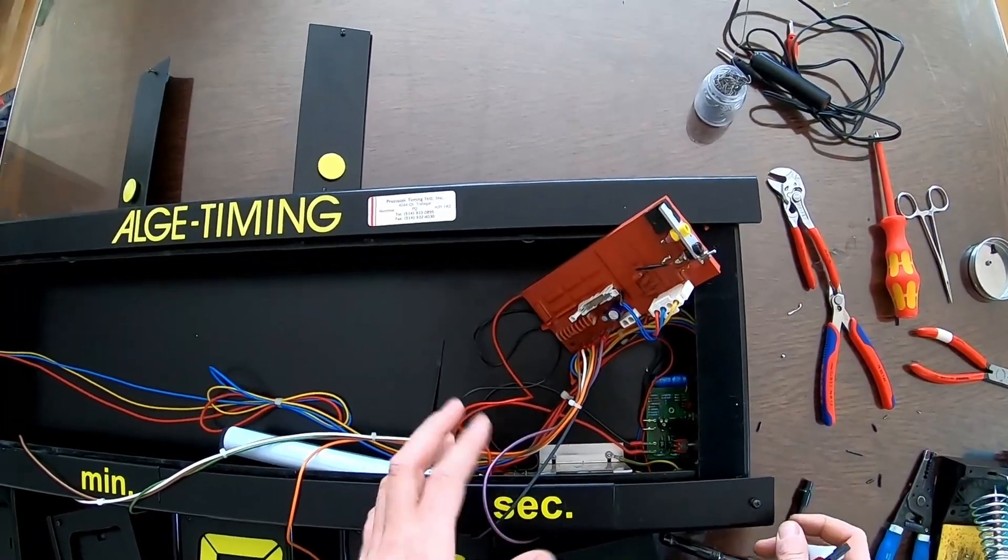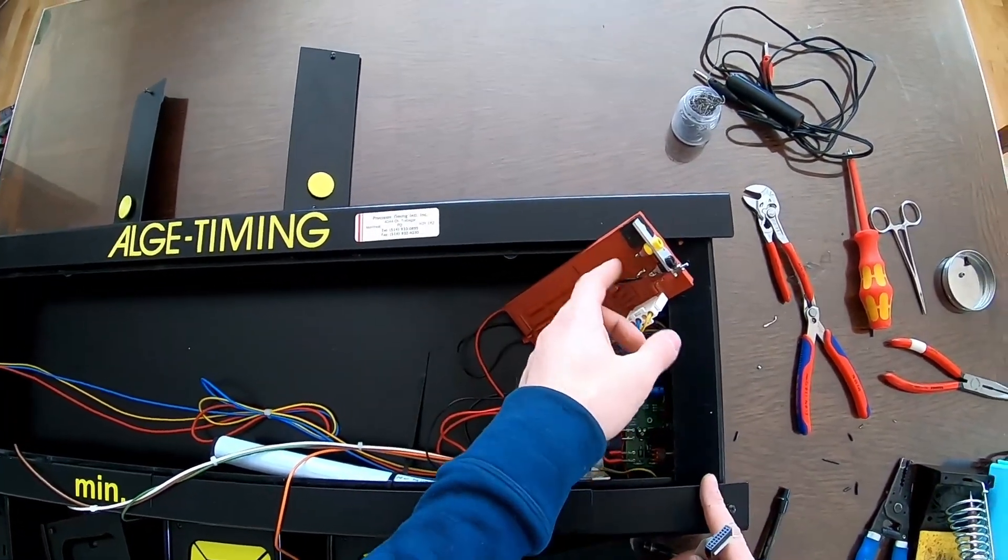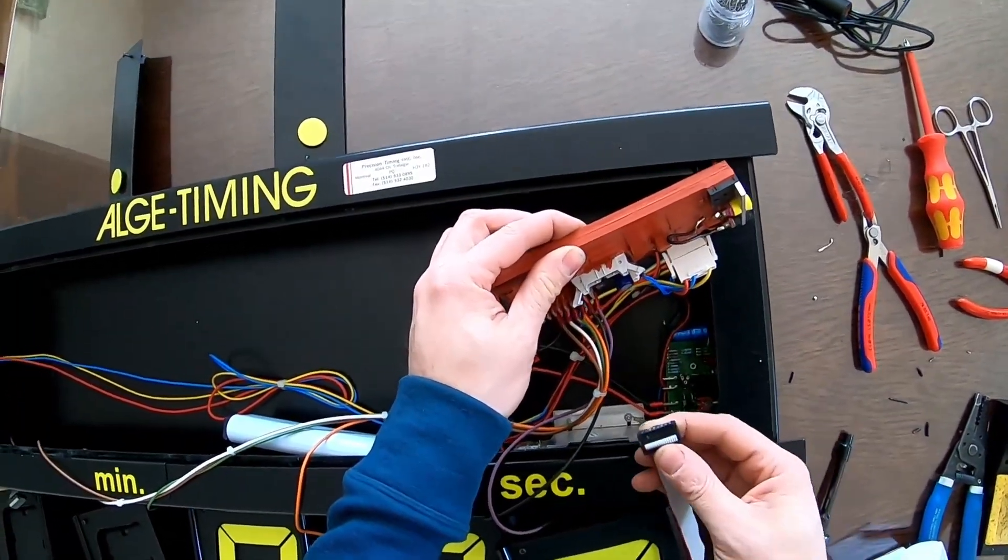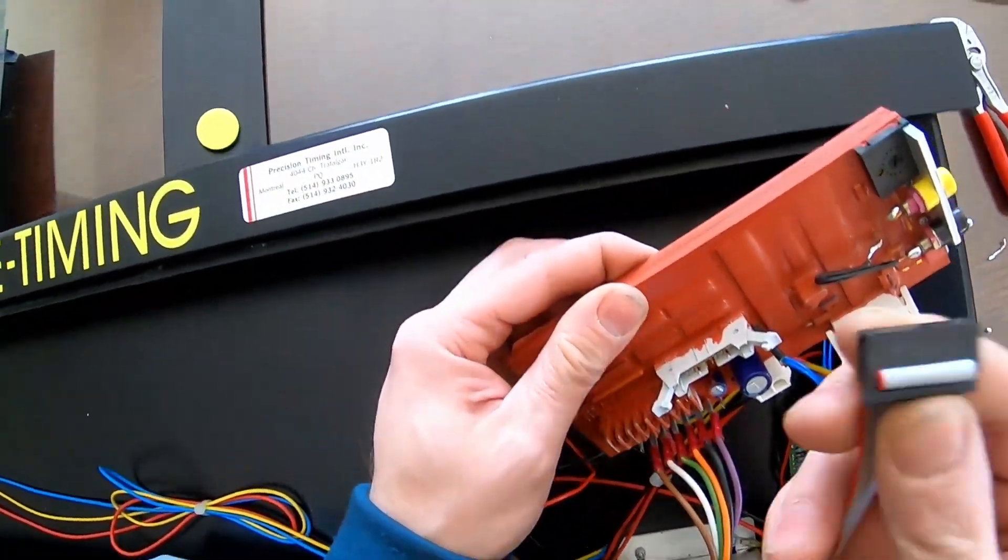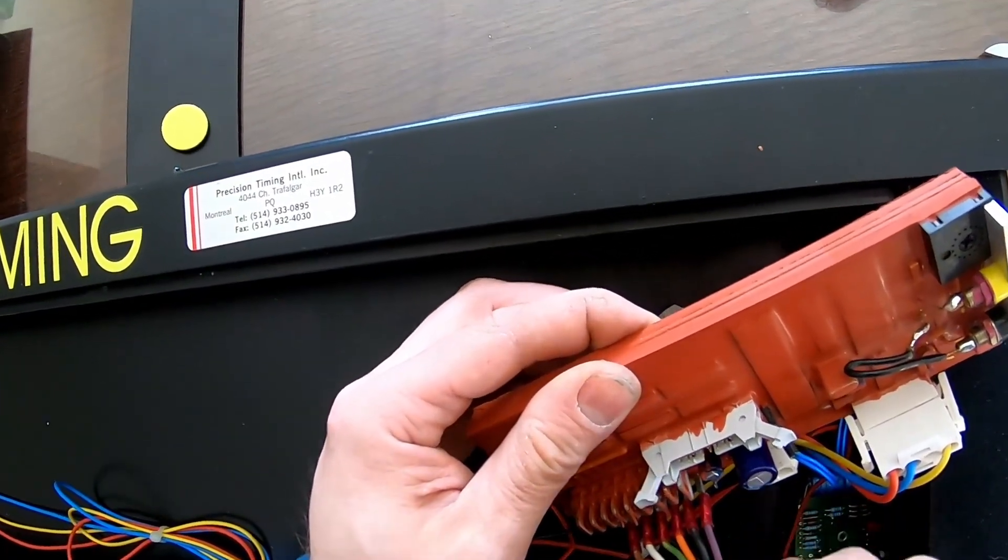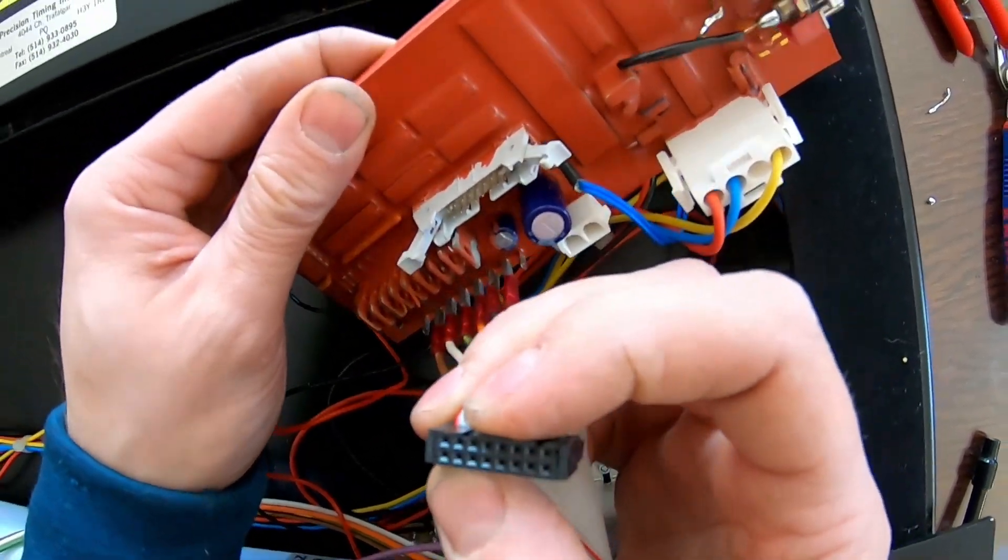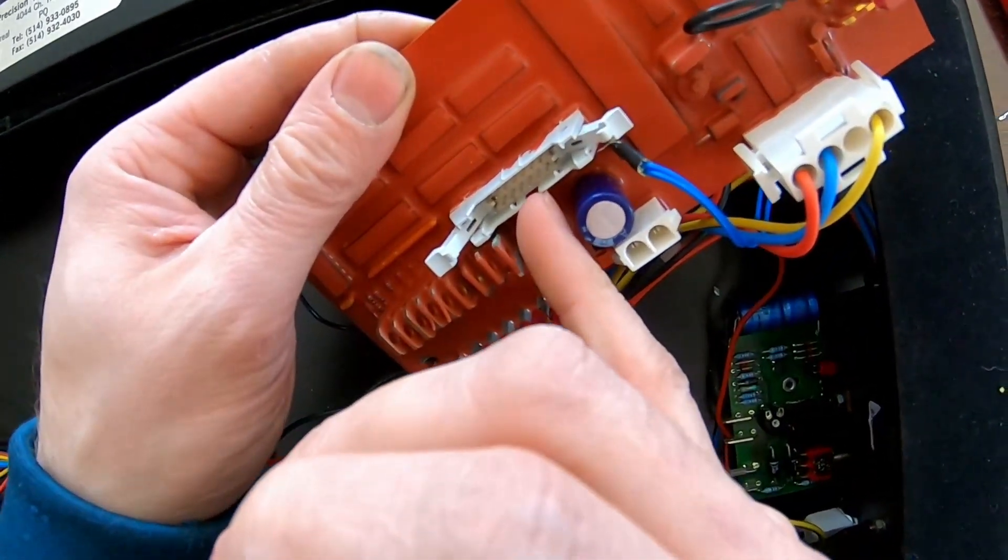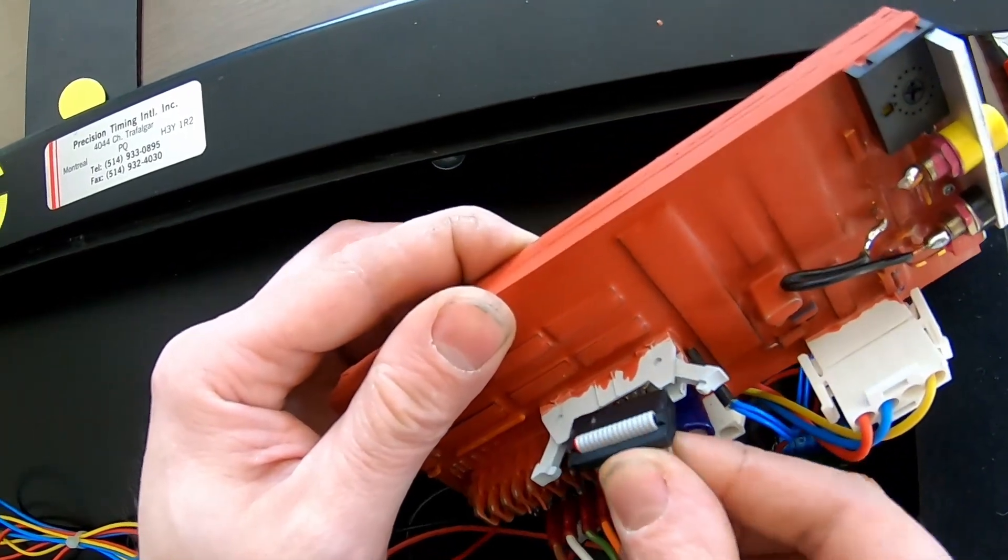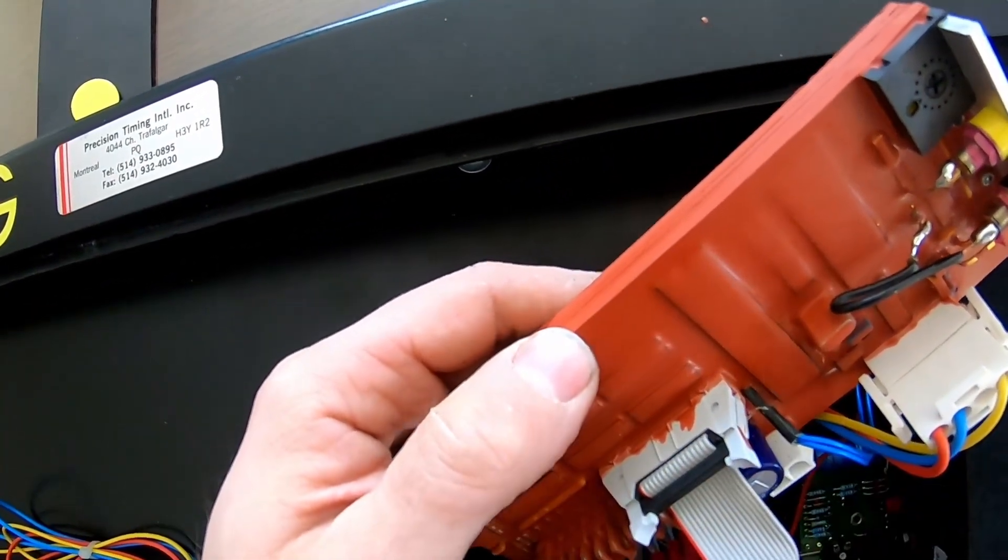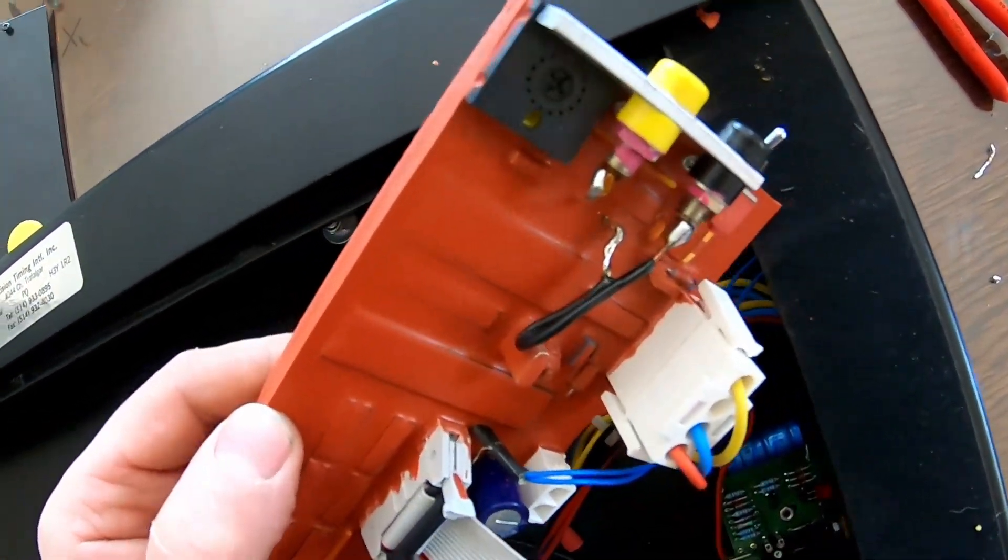All right so now we're gonna test it. I'm gonna test it with the unit open just so we can make sure this is working. First we're gonna reconnect the numbers into this little connector. You'll notice that there's a little square on the one side. You can see it goes to the cutout in the connector here. It can only go in one way. And as you push it in the retention clips will automatically close. Shouldn't take too much pressure.